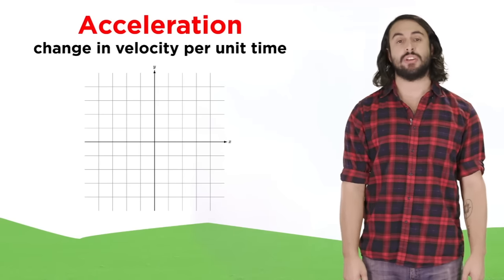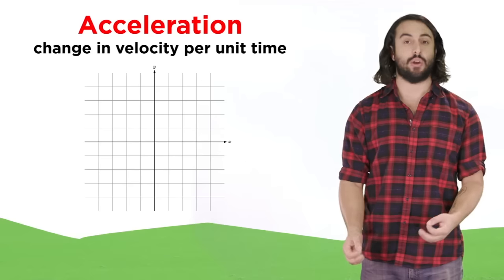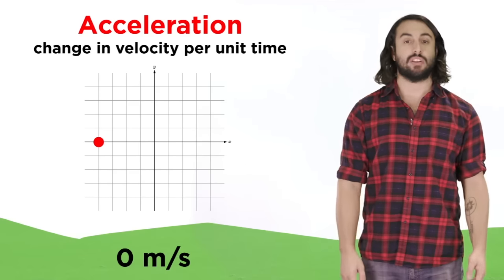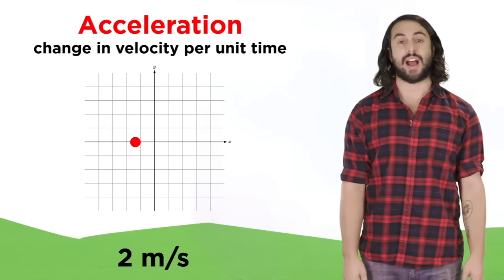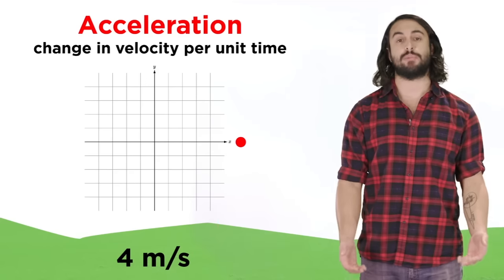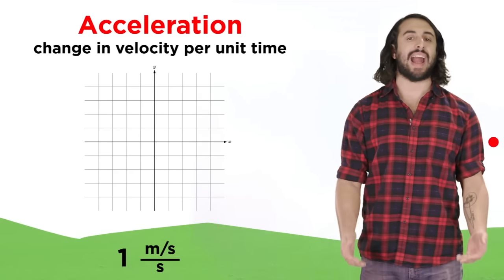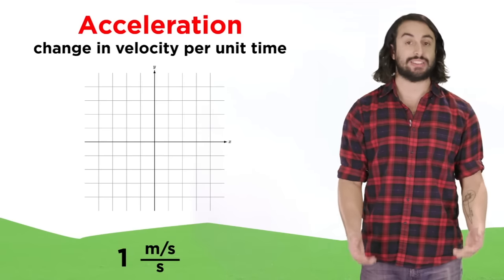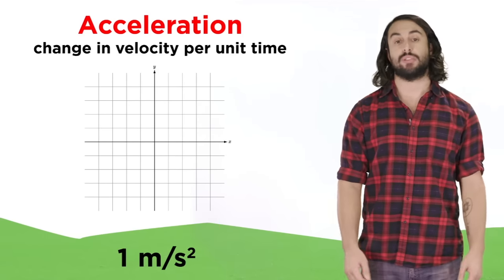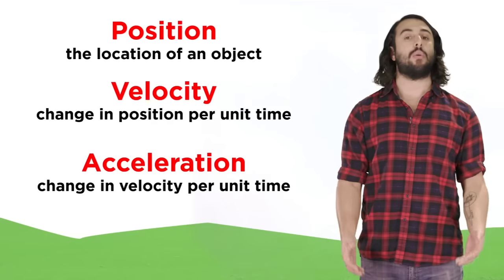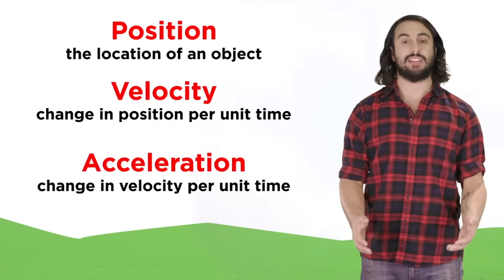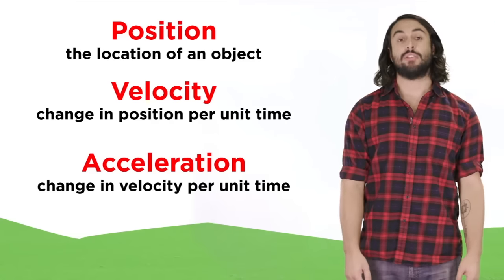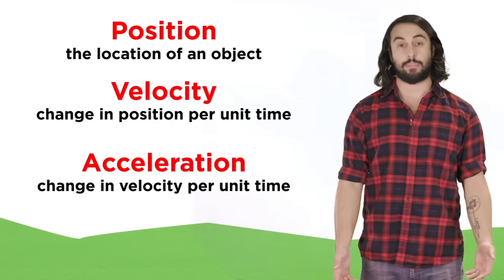And acceleration is the change in velocity over time, so if this object starts at a standstill and over five seconds gradually speeds up to five meters per second, then it is accelerating at one meter per second per second, or one meter per second squared. So that's how we define position, velocity, and acceleration. Now let's discuss each of these in more depth.